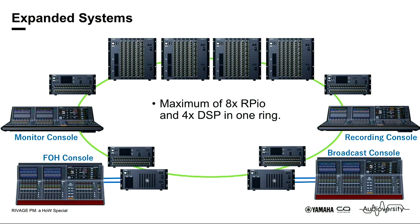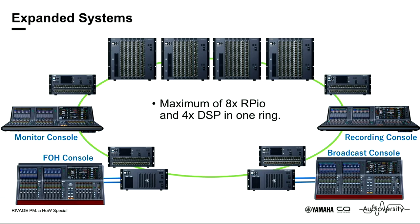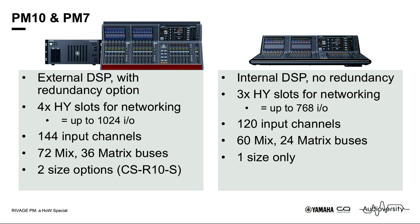If you need to expand, no problem. We can have up to eight RPIO units in one ring, and up to four consoles in one system. What's the difference between PM7 and PM10? The PM10 has the DSP external, which allows redundancy with two DSPs and more networking slots — up to four networks. The PM7 with the DSP inside the console can handle three networks. So you see the difference in IO capability.